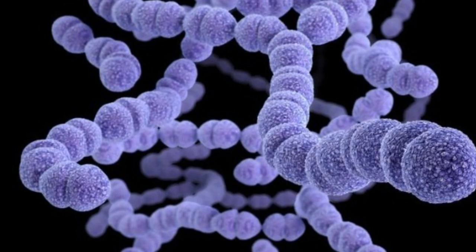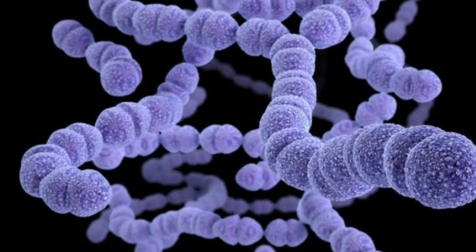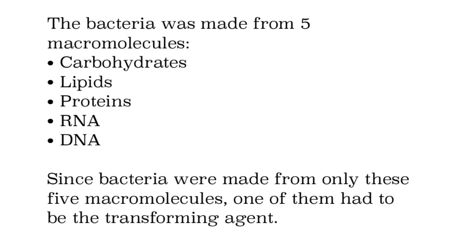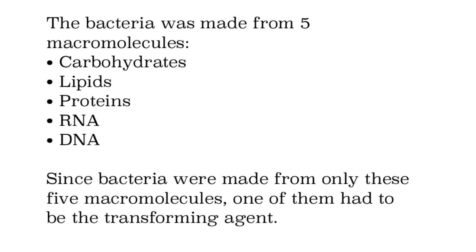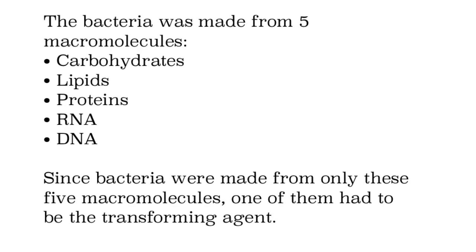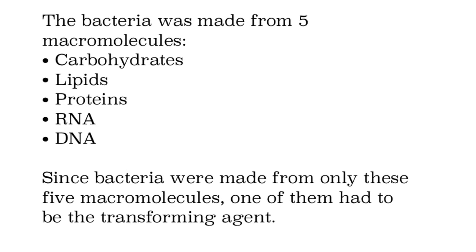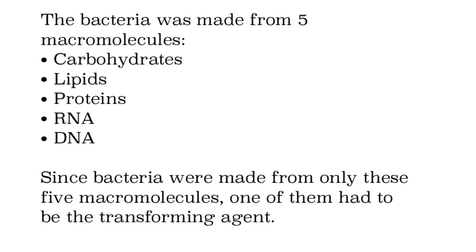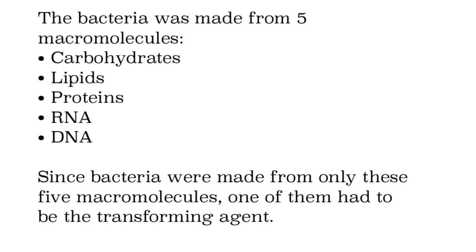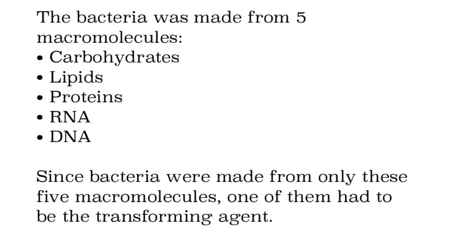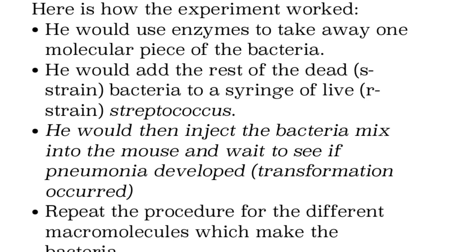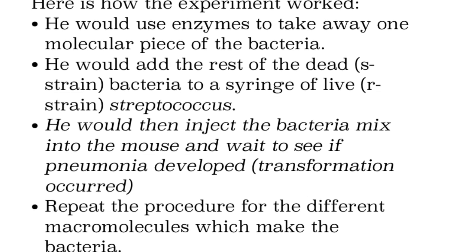It turns out Streptococcus, even though it can cause a lot of diseases, is actually only made out of five macromolecules. There are different types of carbohydrates, lipids, and proteins, but ultimately they're either carbohydrates, lipids, proteins, RNA, or DNA. One of those five things had to be the transformative agent — they just didn't know which one. Everybody thought it was proteins, but they were going to find out if that was true.